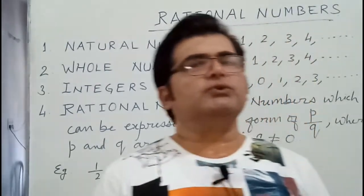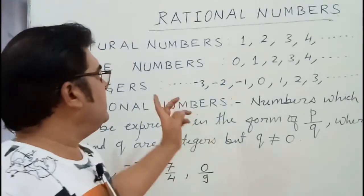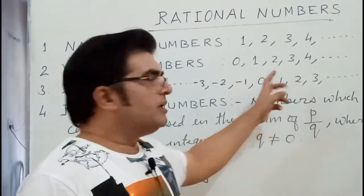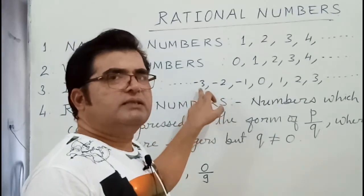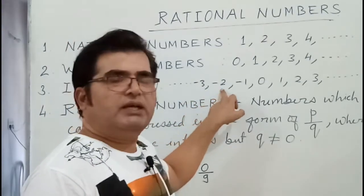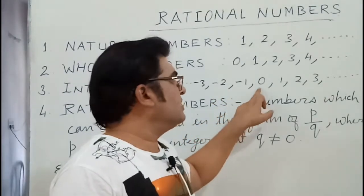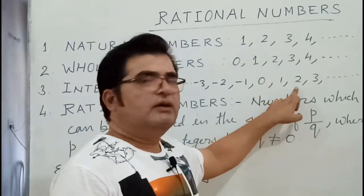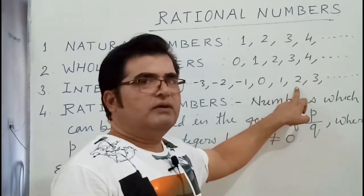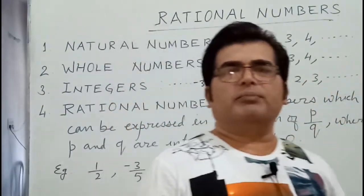Then also you should know every integer is a rational number. Why? Because if minus 3 is there we can write it as minus 3 upon 1, minus 2 as minus 2 upon 1, minus 1 as minus 1 upon 1, 0 as 0 upon 1, 1 as 1 upon 1, 2 as 2 upon 1, 3 as 3 upon 1, 4 as 4 upon 1. So every integer is a rational number.